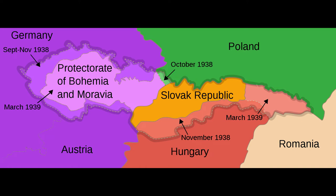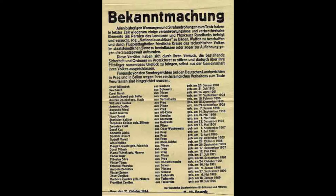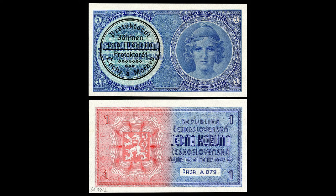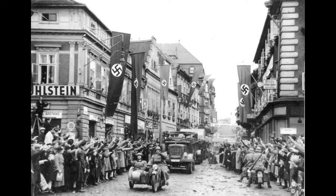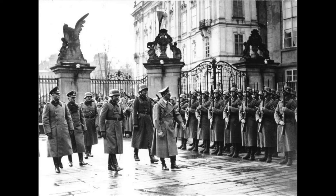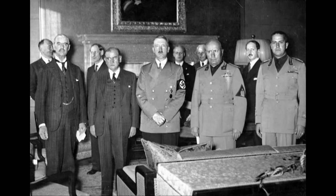Following the Anschluss of Austria to Nazi Germany in March 1938, and after he had obtained the Munich Agreement in September 1938, Adolf Hitler annexed the ethnic Germans living in Czech regions. The loss of the Sudetenland was detrimental to the defense of Czechoslovakia, as the extensive Czechoslovak border fortifications were also located in the same area. As a consequence, the incorporation of the Sudetenland into Germany that began on October 1, 1938 left the rest of Czechoslovakia weak.